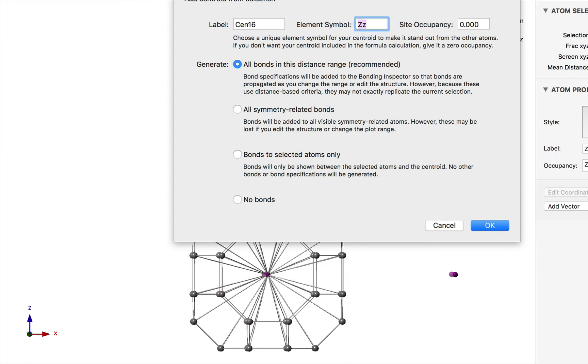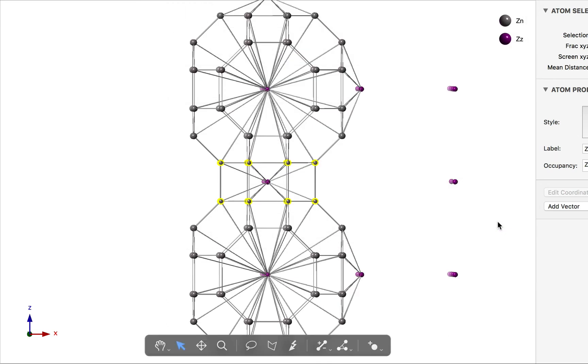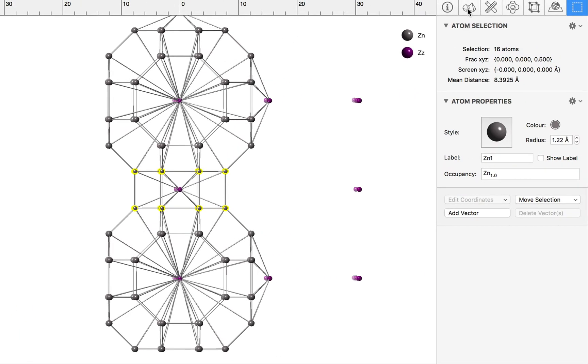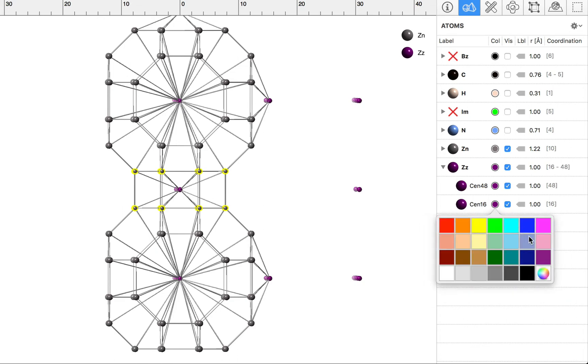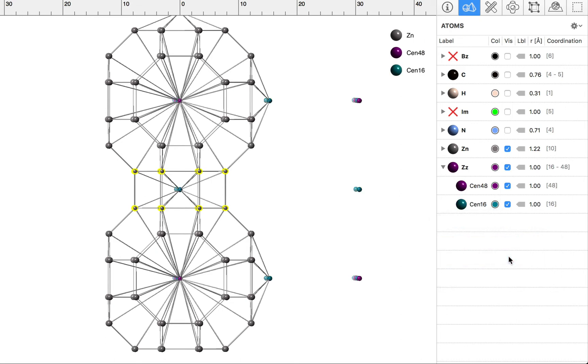Let's call this CEN16. We can use the same element symbol, and we'll generate all bonds in the distance range. OK, back to the atoms inspector. Open up the ZZ element group, and we'll choose a contrasting color for the CEN16 site. Let's choose a light cyan.